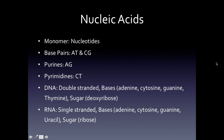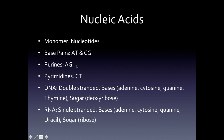Nucleic acids are the last macromolecule type. Their monomers are nucleotides. DNA is made up of four bases: adenine, cytosine, guanine, and thymine. In RNA, thymine is replaced by uracil. Base pairing rules in DNA: adenine pairs with thymine, and cytosine pairs with guanine. In RNA, adenine pairs with uracil, and cytosine pairs with guanine. Remember the phrase 'AG pure': adenine and guanine are purines, while cytosine and thymine are pyrimidines.